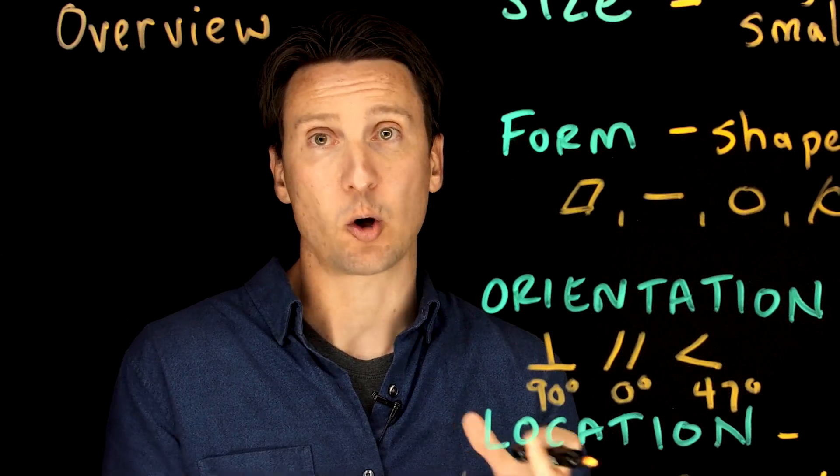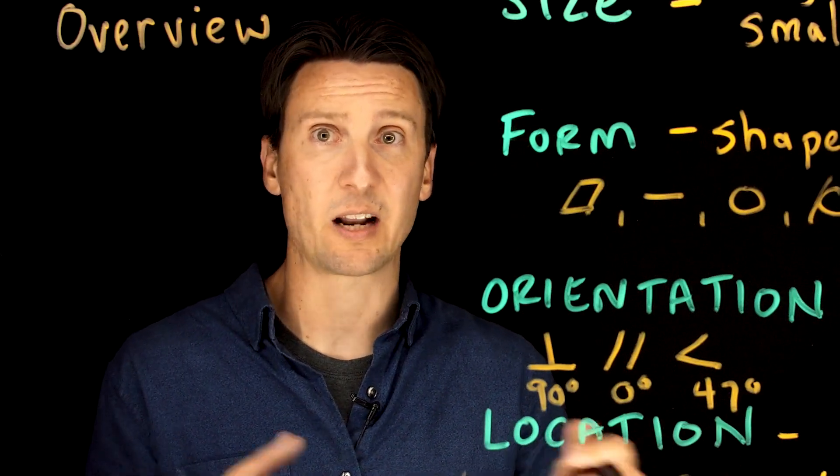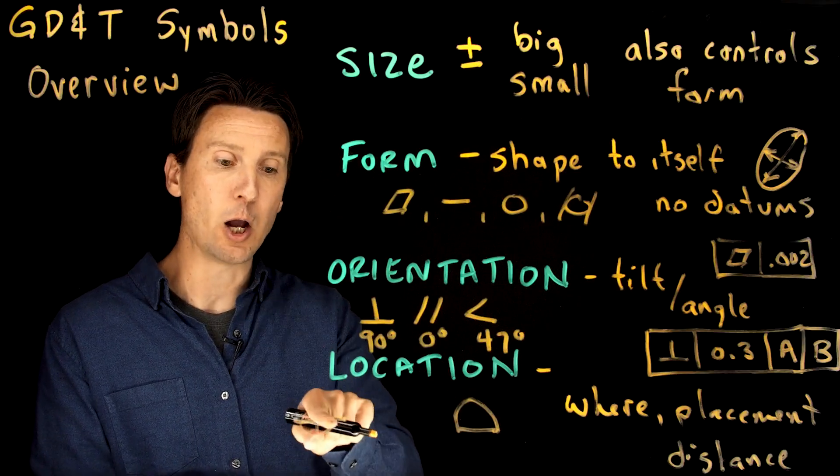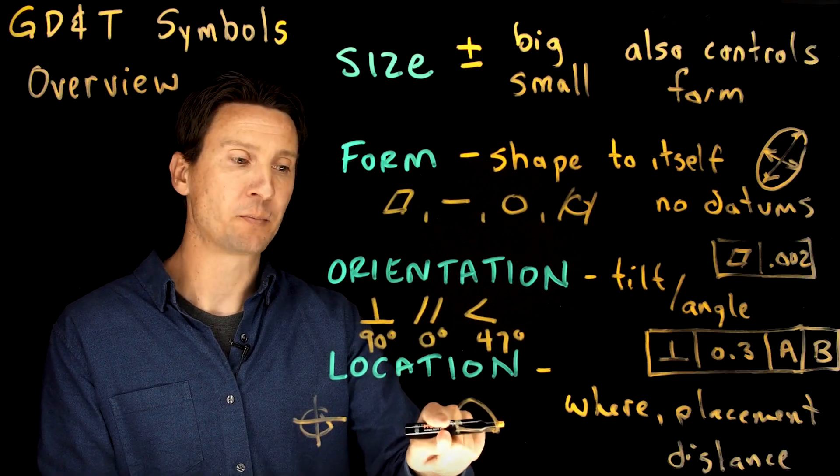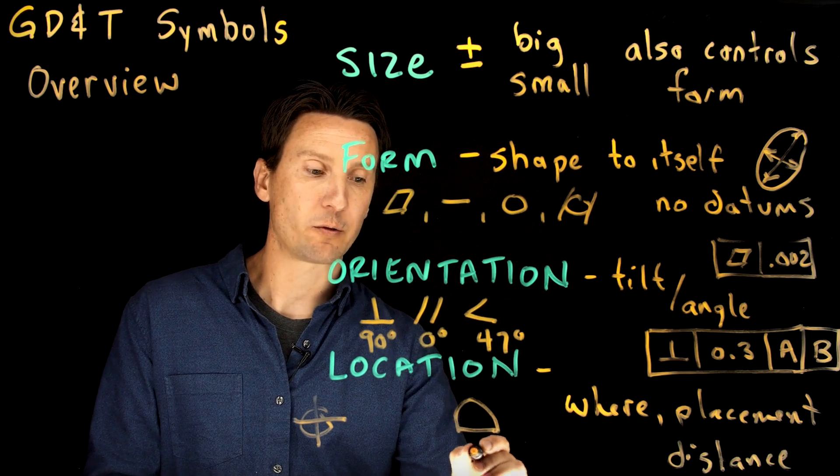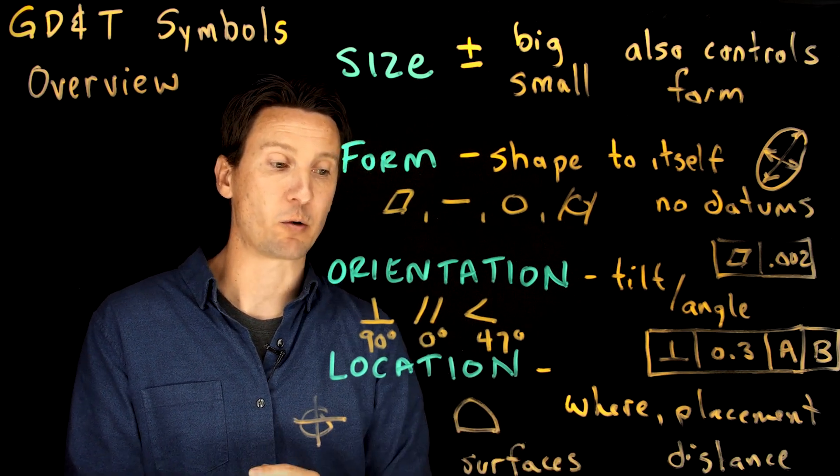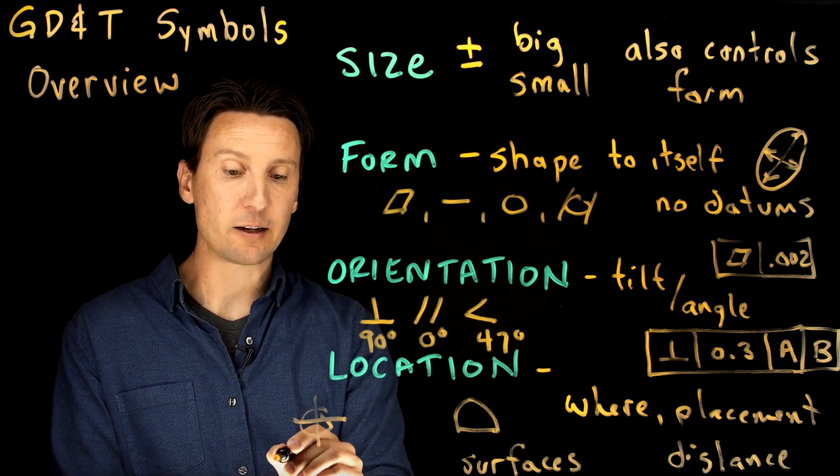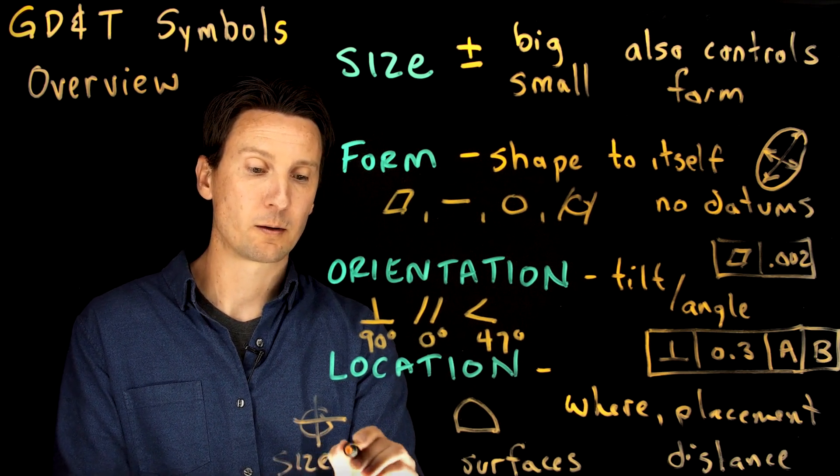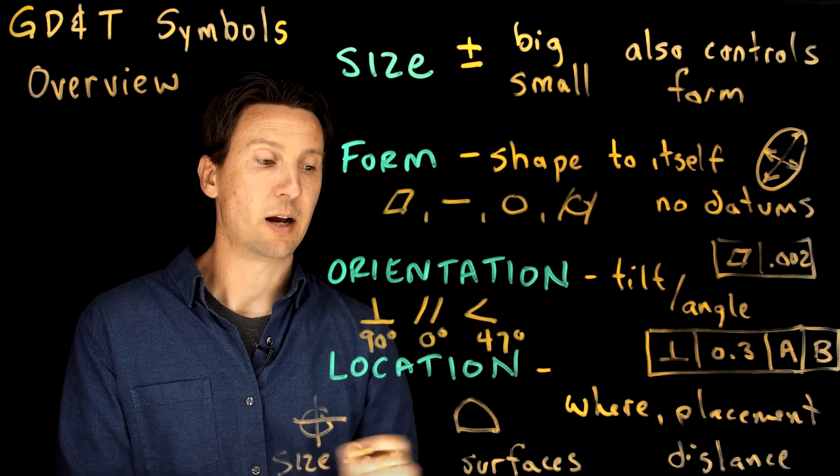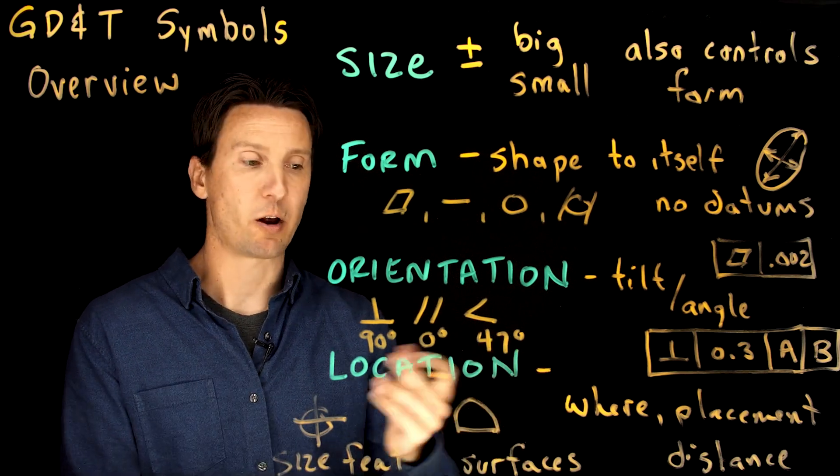Position is for features of size: holes, slots, tabs, pins that have a well-defined axis or center. We locate those with a position symbol. And profile, those will be covered for all of our surfaces. That's most things actually could be applied with profile tolerances. So features of size, size features, and then features without size, which is another name for surfaces.